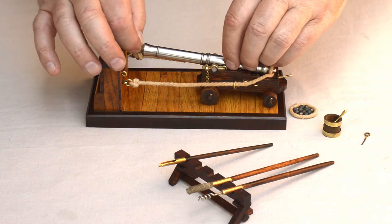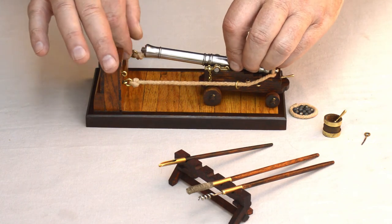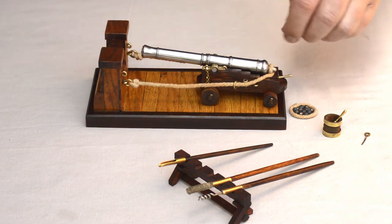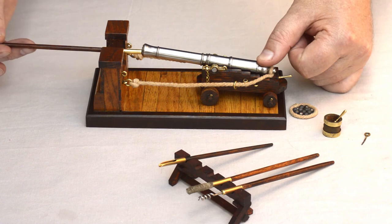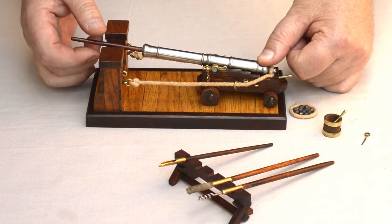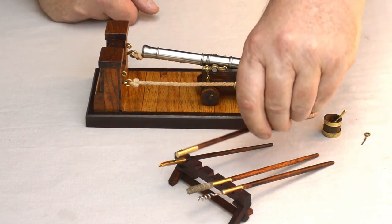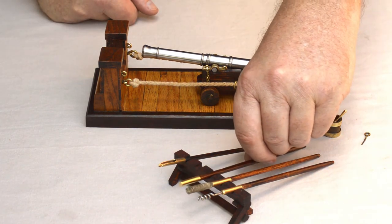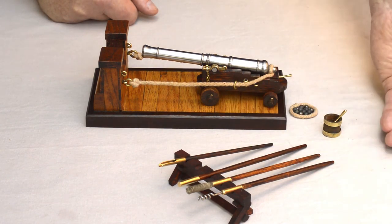Before the advent of priming quills, the gun captain would prime the gun with a powder horn. However, during the Napoleonic era, goose quills were prepared and priming powder was inserted into them, which made a ready-to-use priming charge that was then inserted into the vent or touch hole.